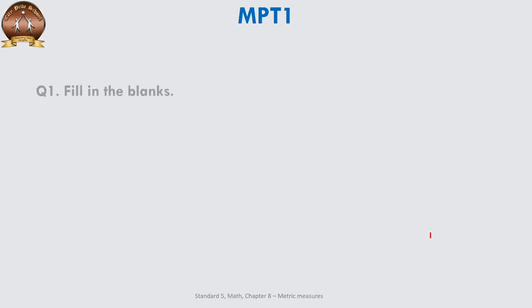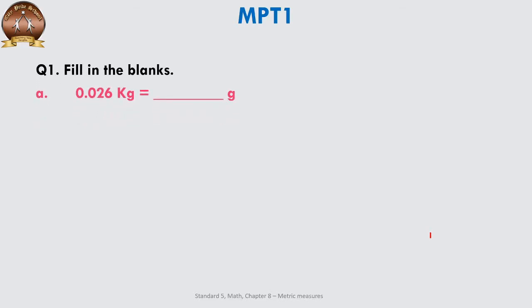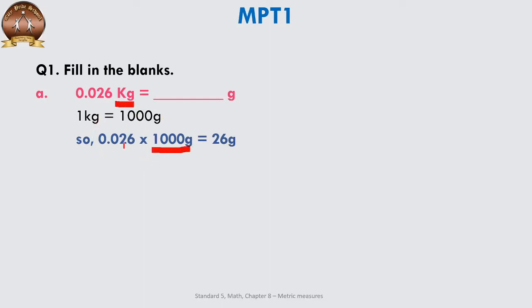Moving on to MPT 1, we have filling the blanks. First, convert 0.026 kilograms to grams. Kilogram is the bigger unit; gram comes under the unit place, so we multiply. Since 1 kg equals 1000 grams, we multiply by 1000. When we multiply a decimal number by 1000, the decimal shifts three places to the right. So we get 26 grams as the answer.